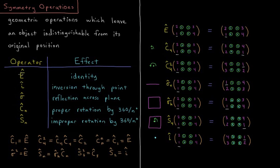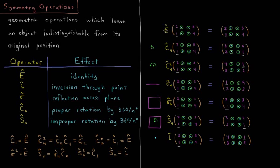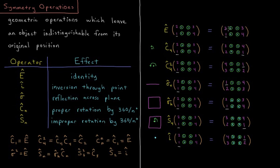The first is the identity. The effect of the identity operator is to do nothing. So if I have this molecule where I have each particular location labeled one, two, three, four, and I do the identity on it, then I do nothing.